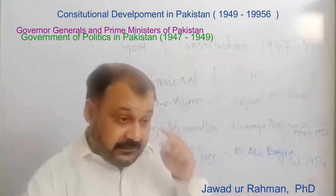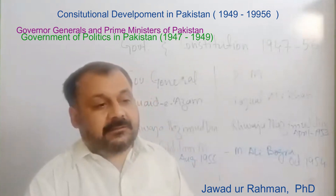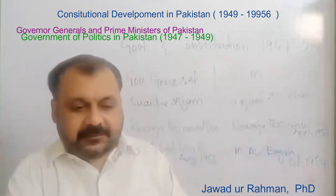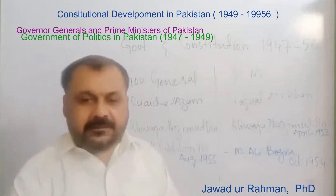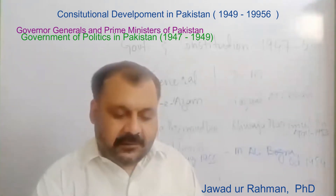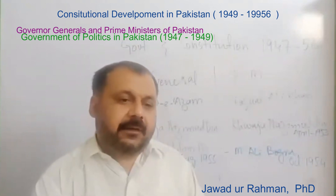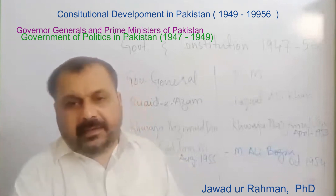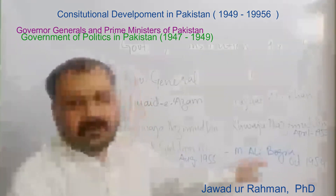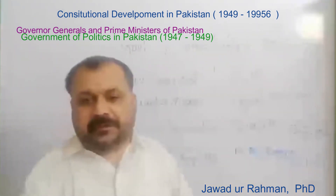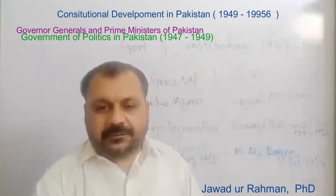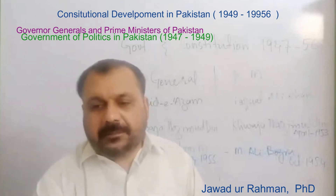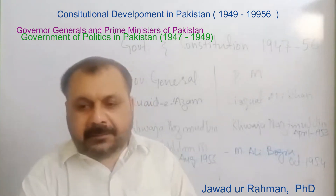The dissolution led to litigation. The president of the constituent assembly, Maulvi Tamizuddin Khan, filed a petition. He first approached the Chief Court at Sindh, which gave a unanimous decision in his favour. However, this was challenged in the Federal Court, where Justice Munir and his fellow judges decided in favour of Ghulam Muhammad. The entire cabinet was then removed and a second constituent assembly was elected by provincial assemblies. In this second assembly, the Muslim League, though the single largest party, did not hold a simple majority.